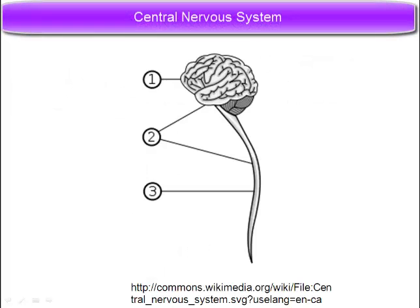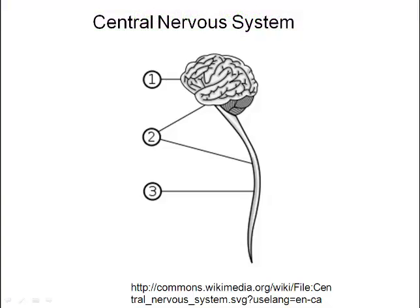The central nervous system consists of the spinal cord and the brain. Both are protected by bone. The spinal vertebrae protect the spinal cord and the skull protects the brain.